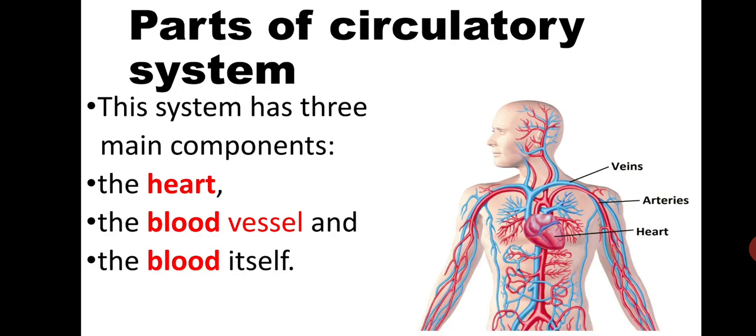Here are the parts of the circulatory system. The system has three main components: the heart, the blood vessels, and the blood itself. In the picture you can easily see where the veins are, colored blue, arteries which are red in color, and the heart.